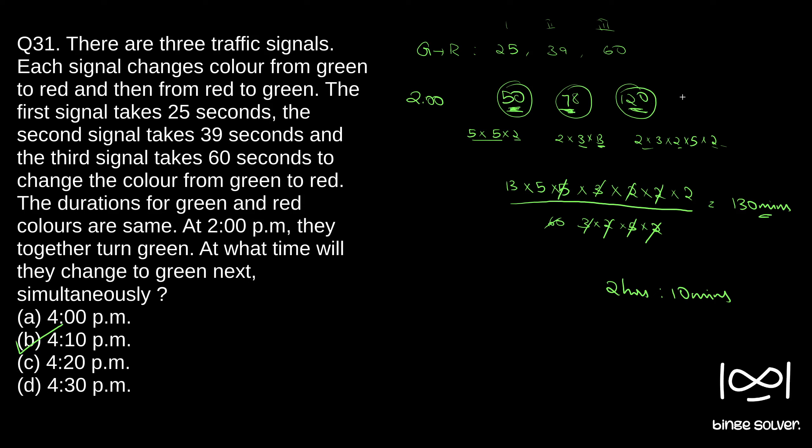Once you go through that video you will understand how LCM is the time at which they simultaneously change to green. Even if you're not familiar with how to find LCM of these numbers, that is also discussed in that video. You can check that out to have a better understanding of this topic. So I hope that is clear. The solution to question 31 is B, 4:10 p.m.